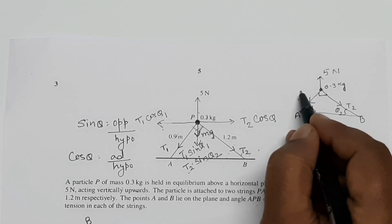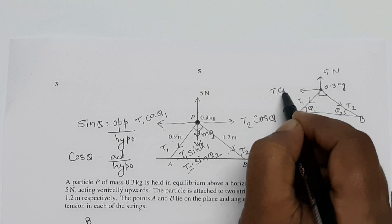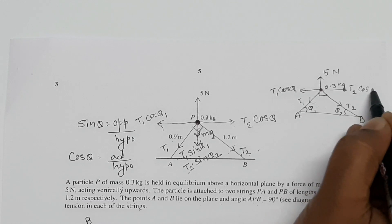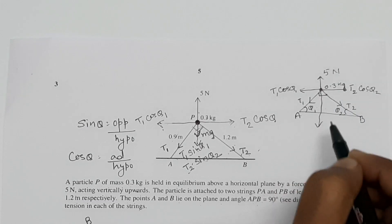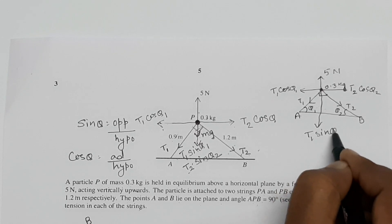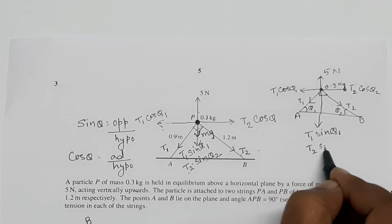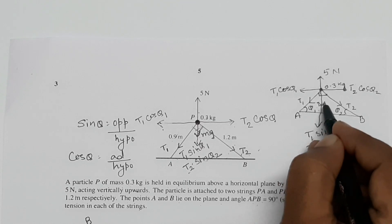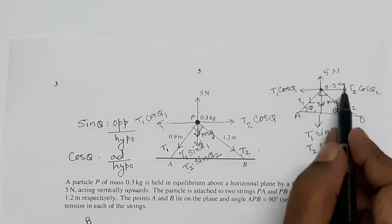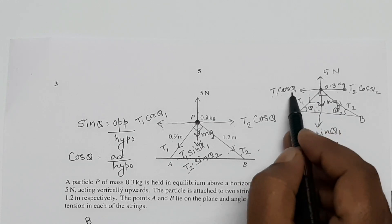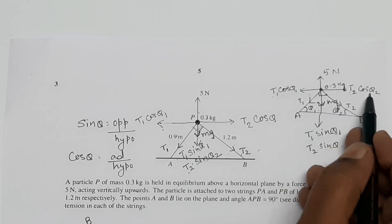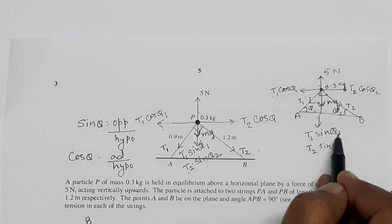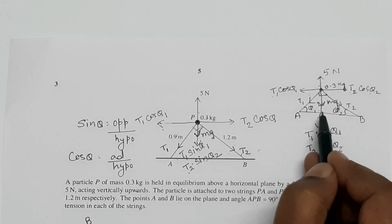So the horizontal component of T1 will be T1 cos theta 1 and for T2 it will be T2 cos theta 2. The vertical component of T1 will be T1 sin theta 1 and for T2 it will be T2 sin theta 2. There is another vertical force which is working directly opposite to 5 Newton that will be Mg. So there are two forces working horizontally T1 cos theta 1 and opposite to that will be T2 cos theta 2 and vertically against 5 Newton there are three forces that is T1 sin theta 1, T2 sin theta 2 plus Mg.